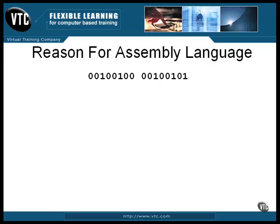The second byte is the value — shown here is the binary representation of the value 37. There is no difference between instructions and data. This is the same instruction. It can be written as two hexadecimal digits this way, or as two base 10 numbers this way. Bits are bits. Executable code and data are the same, and it doesn't matter how you write them as long as what you write can be interpreted and stored in the computer as zeros and ones.